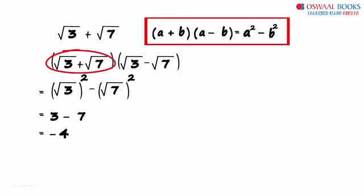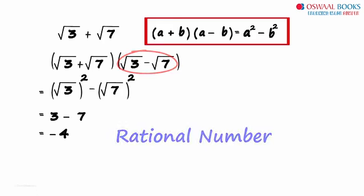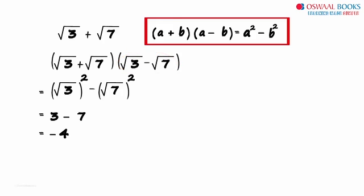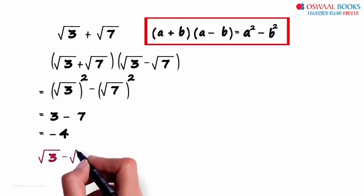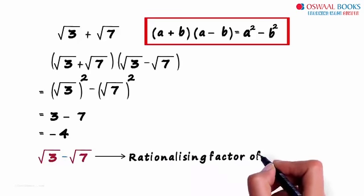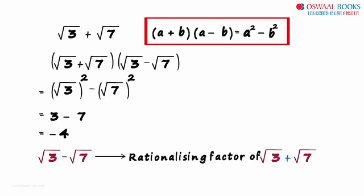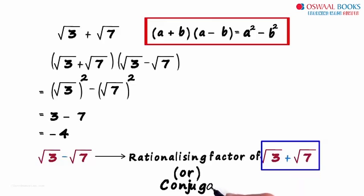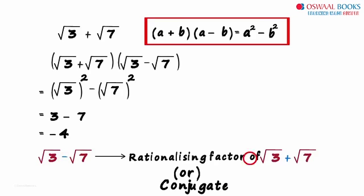We multiply this with root 3 minus root 7 to get a rational number. Hence we can say that root 3 minus root 7 is a rationalizing factor of root 3 plus root 7. It can also be called the conjugate of root 3 plus root 7. All we did to get the conjugate is change the sign in between — we just made the plus sign a minus sign to get the conjugate.